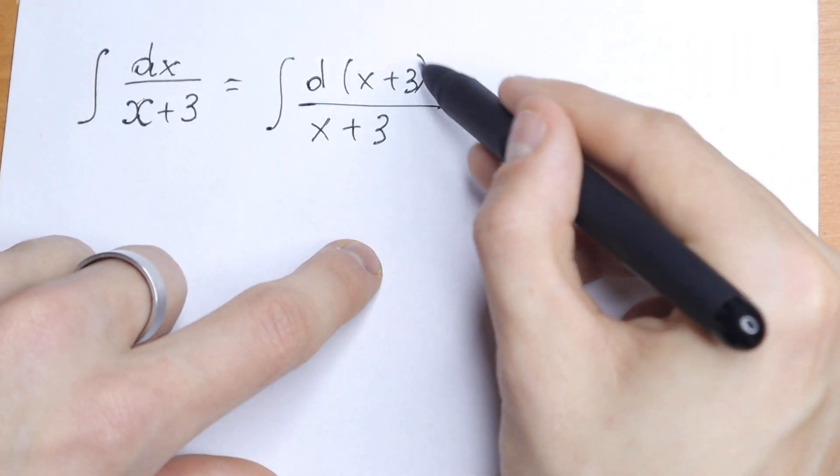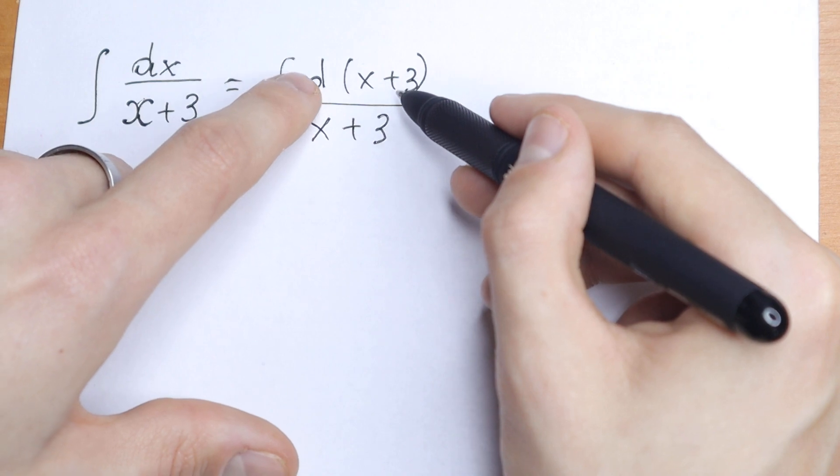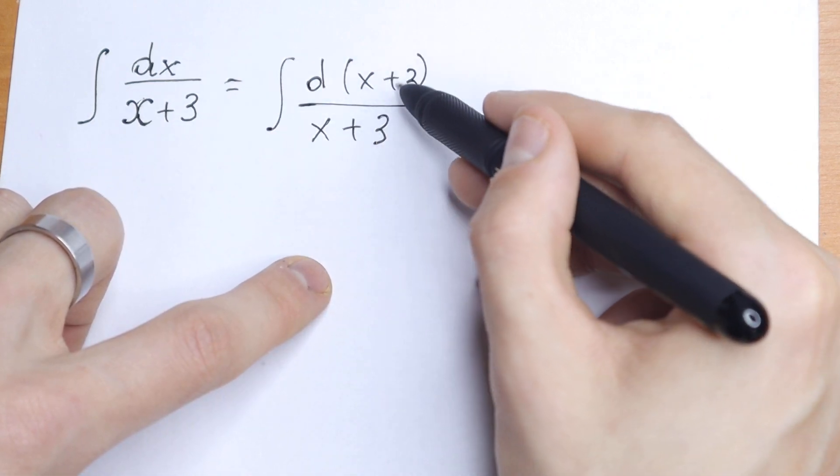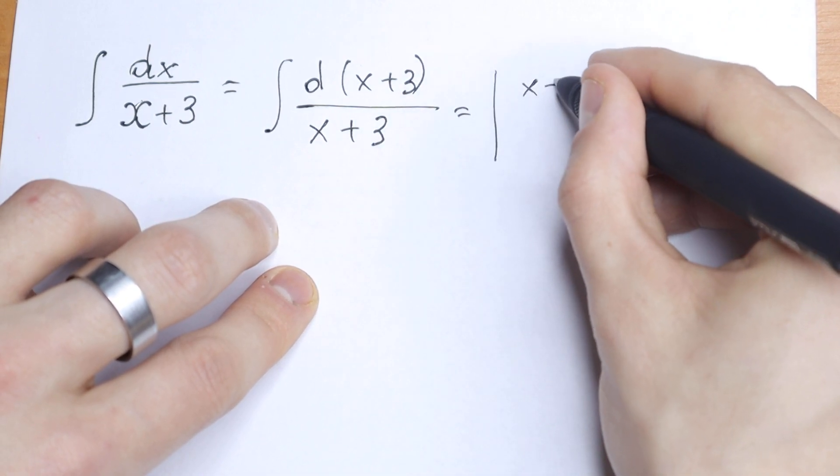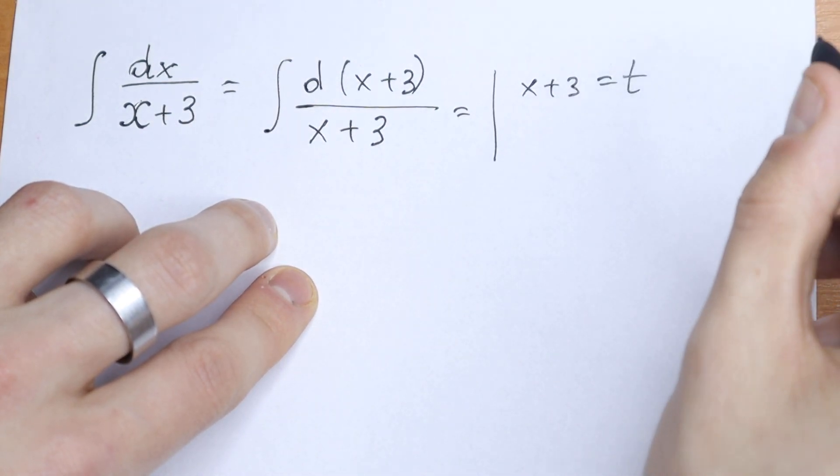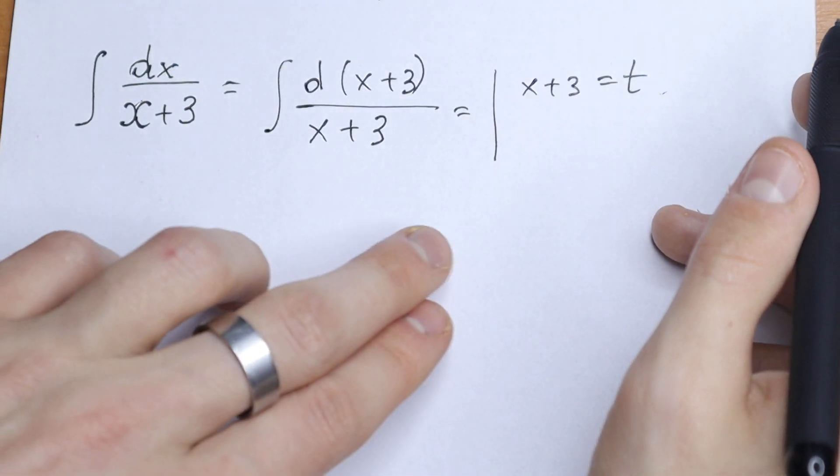This change doesn't affect anything because if we take the derivative of x plus 3, nothing changes. But now we can use a substitution. Let x plus 3 be our t, then dt will be the same.